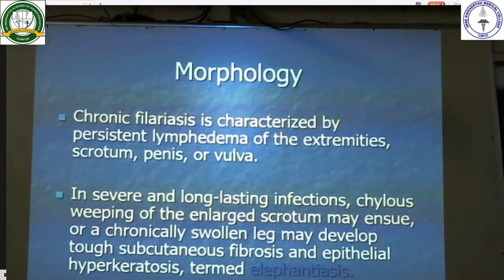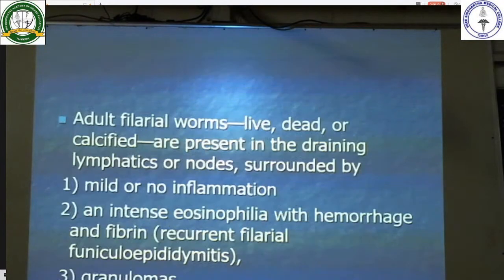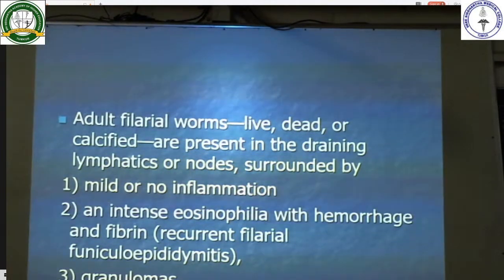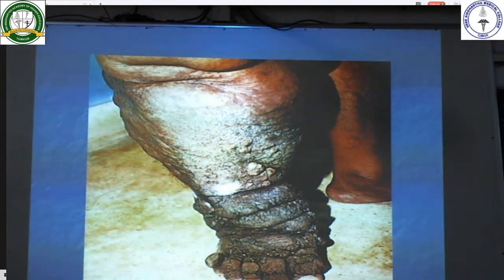Morphologically, chronic filariasis is characterized by persistent lymphedema of the extremities, scrotum, penis, or vulva. In severe and long-standing infections, chylous weeping of the enlarged scrotum may ensue, or a chronically swollen leg may develop tough subcutaneous fibrosis and epithelial hyperkeratosis termed elephantiasis. Adult filarial worms — live, dead, or calcified — are present in draining lymphatics or nodes, surrounded by mild or no inflammation; intense eosinophilia with hemorrhage and fibrin are seen in recurrent filarial funiculoepididymitis. It can also present with granulomas. This is a peripheral limb showing elephantiasis. That is the end of the class.